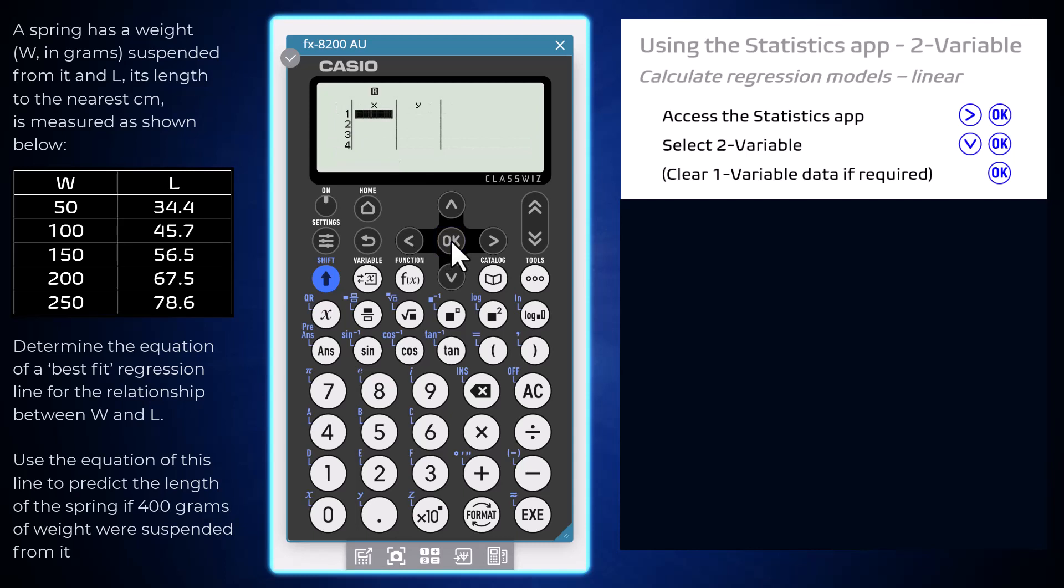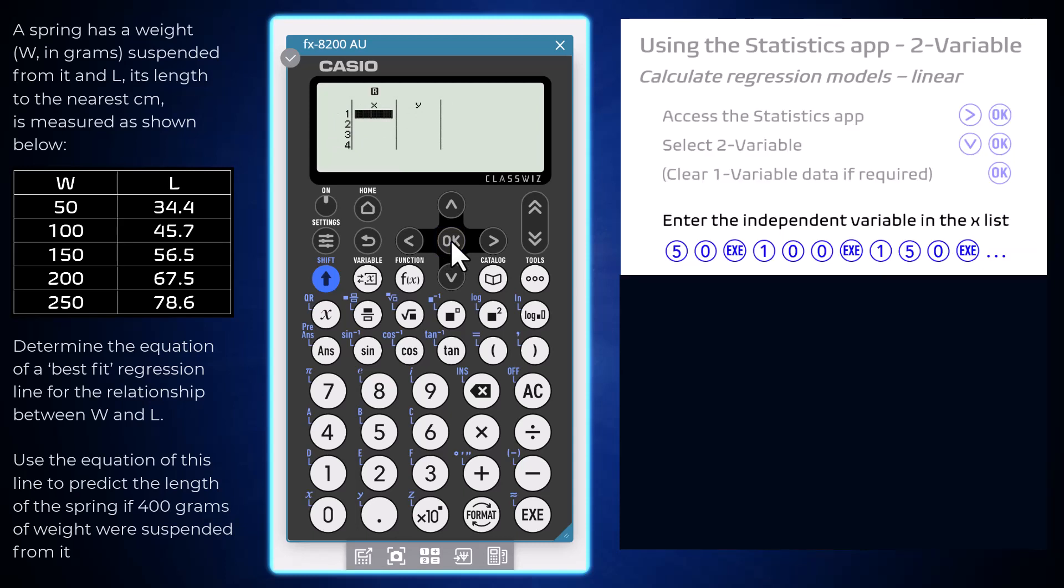To enter bivariate data, first enter the independent variable as the X list. In this case this is the weight values. Press execute between each entry.